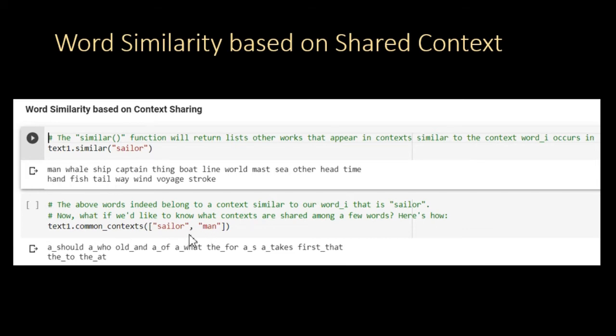Now, what if you have two words and you want to see what context they share? This is very important if you're trying to come up with patterns and templates to do quick filtering in text. To do that, you can use the .common context method within the text object.